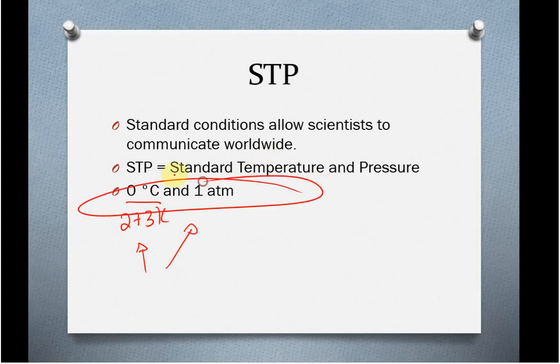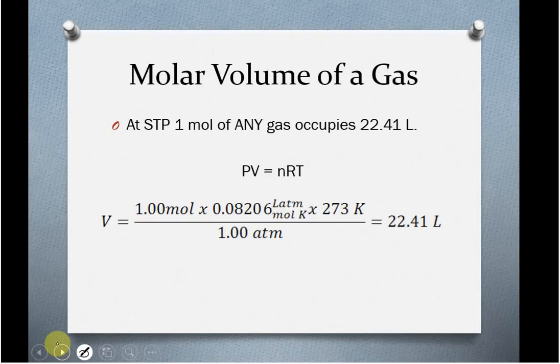It turns out that this is basically the temperature and pressure at sea level on basically a spring day. You do need to know this, guys. Now, at STP, if we plug in one mole of any gas at one atmosphere and 273 Kelvin, what happens is when you solve this, you end up getting a nice 22.41 or 22.4 liters.